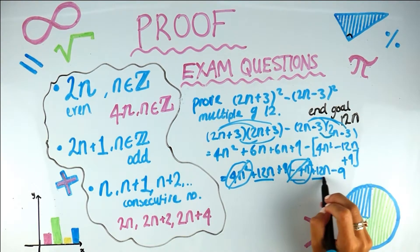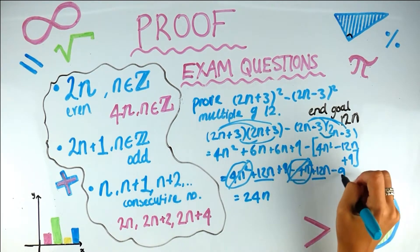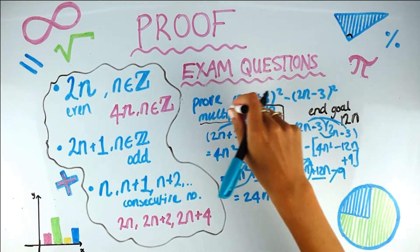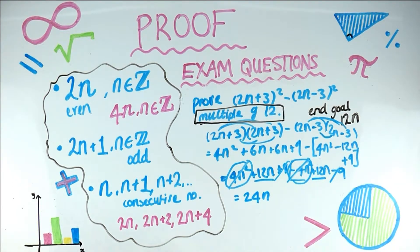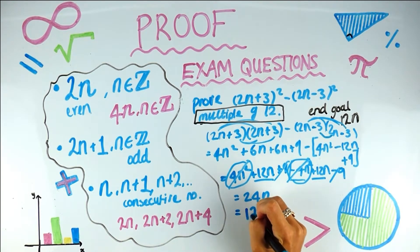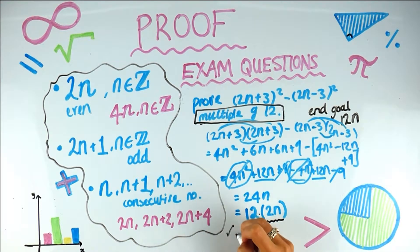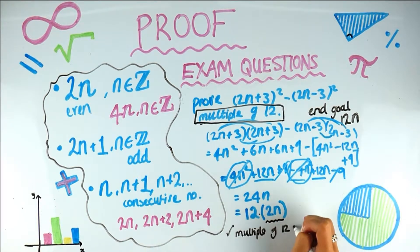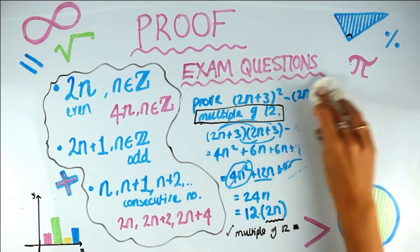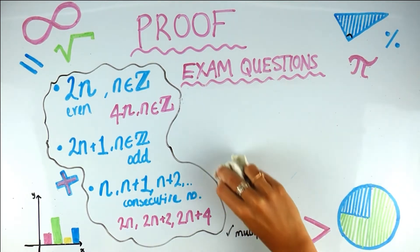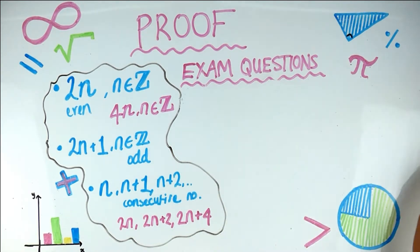Collecting like terms: the 4n² terms cancel, we get 12n + 12n which is 24n, and 9 − 9 which cancels. So we have 24n. Since we need a multiple of 12, we factorize: 12 times 2n. Since 2n is an integer, this is 12 times an integer, proving it's a multiple of 12. The little square shows you've completed the proof.